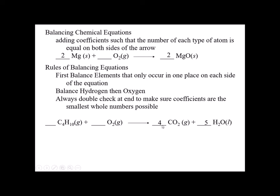Now I look at oxygens. On the product side: four times two is eight oxygens from CO2, plus five times one is five oxygens from water, giving me 13 oxygens on the product side. Oxygen only appears on one side on the reactant side as O2. If I put 13 in front of O2 I'd have 26 — too many. So I need to put 13/2 in front of O2; then 13/2 times two gives me the 13 oxygens I need to match.